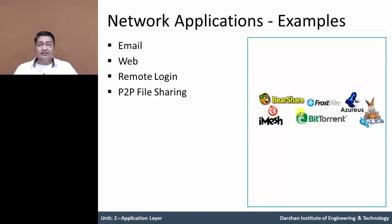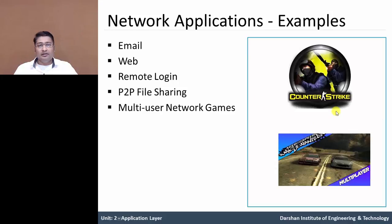P2P file sharing — as you already know, BitTorrent: when you need to download a movie, software, or music from torrent, you use the BitTorrent application. This application is a P2P file sharing network application. There are many such applications available. Multi-user network games — examples are Counter-Strike and NFS Most Wanted. These are multiplayer networking games and are examples of network applications.